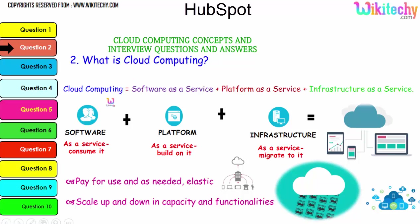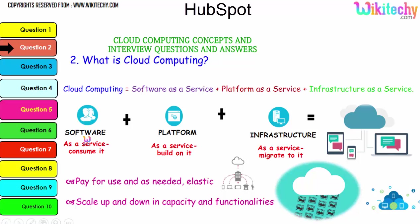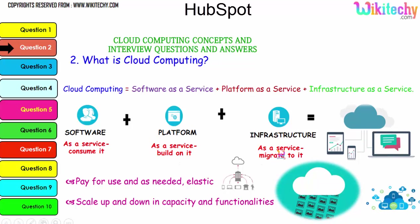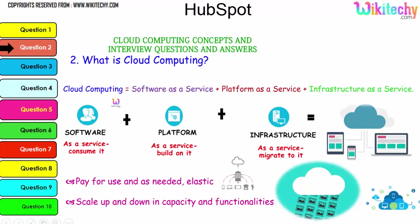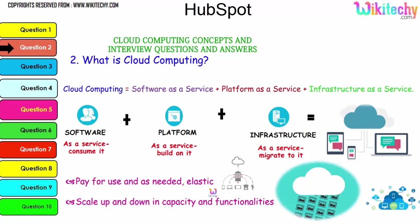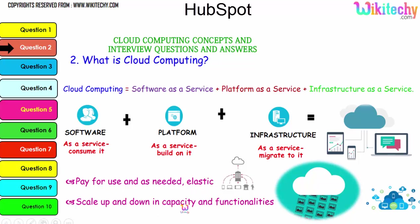Cloud computing is Software as a Service (SaaS), where software is consumed as a service; Platform as a Service (PaaS), where a platform is considered a service; and Infrastructure as a Service (IaaS). The collaboration of software, platform, and infrastructure is referred to as cloud computing. The major advantage is pay-for-use: if you need minimal storage, pay for that; if you need bigger storage, pay for that. It's elastic — you can scale up and down in capacity and functionalities.